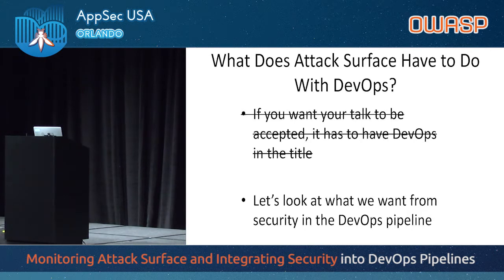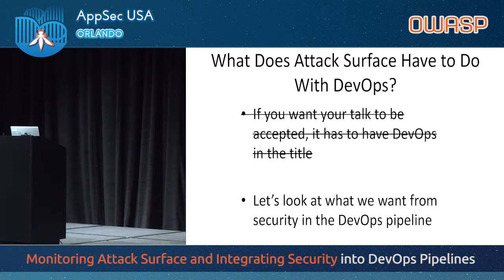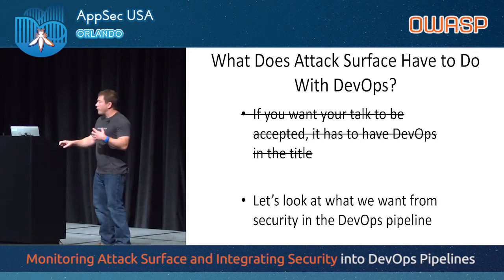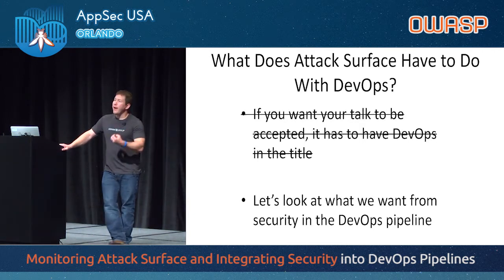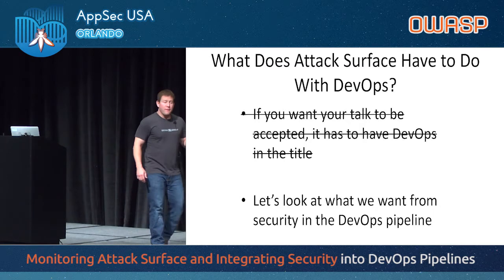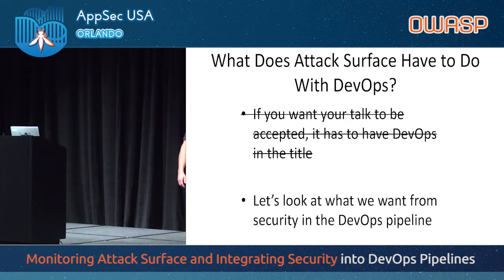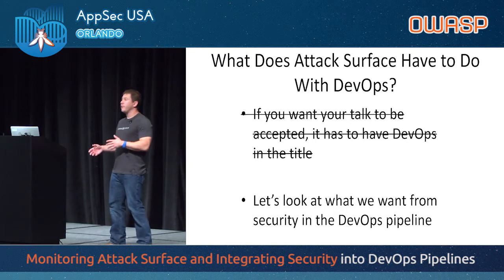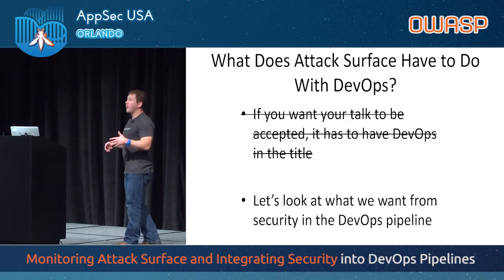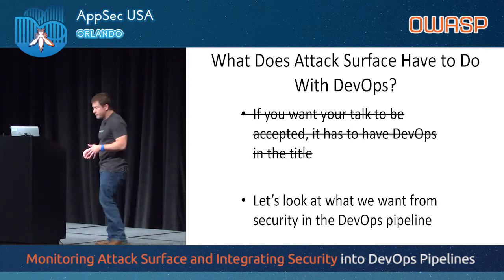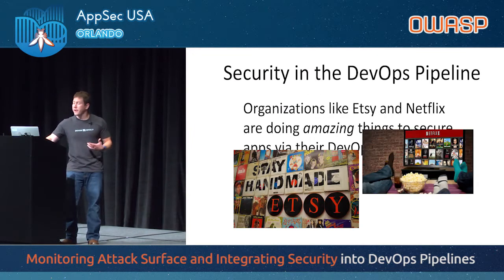This is not a replacement for other activities that you might do. If you integrate app security testing in your DevOps pipeline, it doesn't mean you don't need to do penetration testing, threat modeling, or all this other stuff. The goal is: how can we identify serious vulnerabilities far earlier so that developers can fix those before they get pushed out to production and become a problem? This is not a replacement for your normal testing program, but these are additional activities you can undertake. And we're going to use attack surface as a lens to look at that.